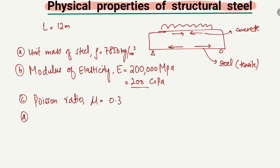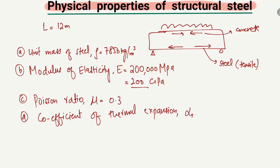The next physical property is the coefficient of thermal expansion for steel reinforcement. The coefficient of thermal expansion for structural steel is 12 × 10⁻⁶ per degree centigrade.